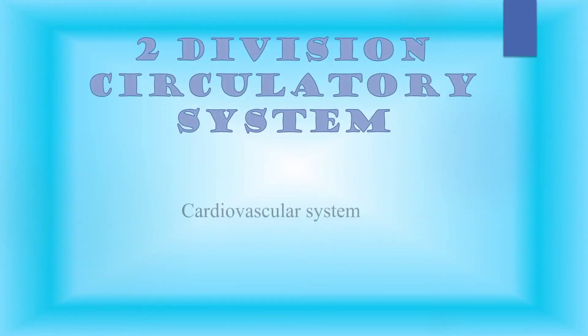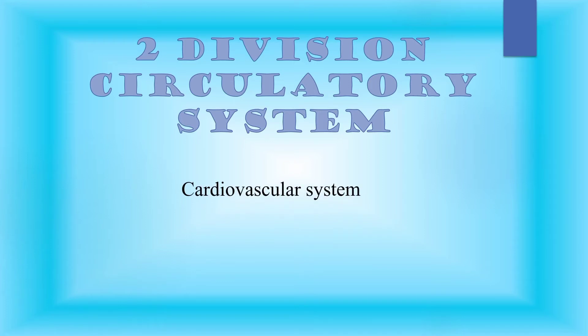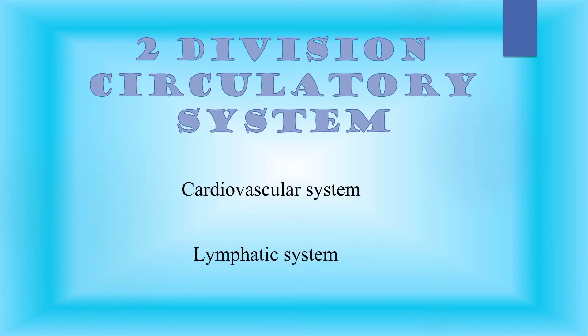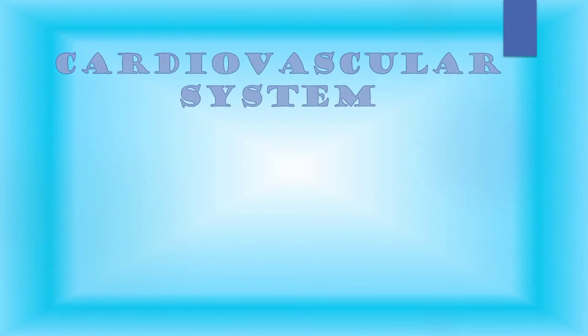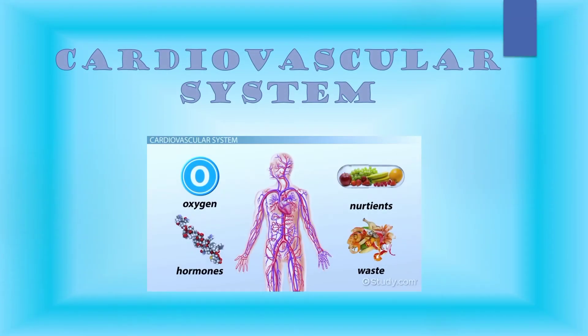There are two divisions of the circulatory system: the cardiovascular system and the lymphatic system. The cardiovascular system transports blood, while the lymphatic system transports fluid called lymph.